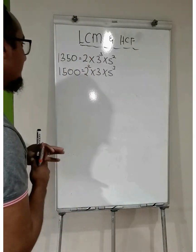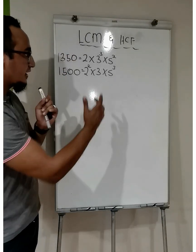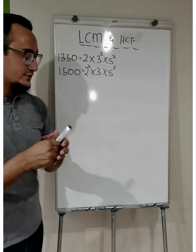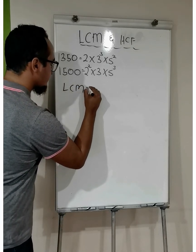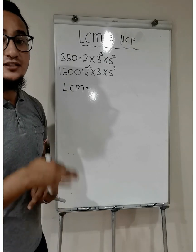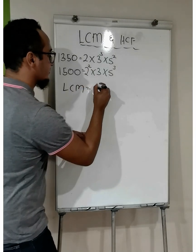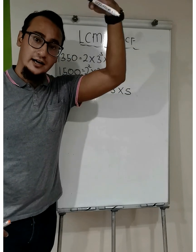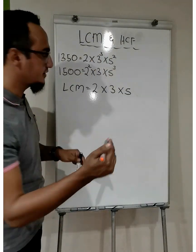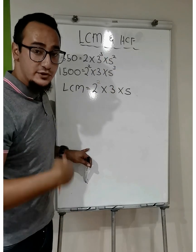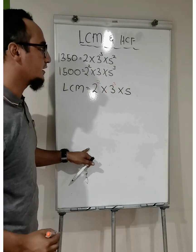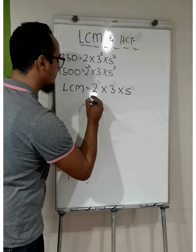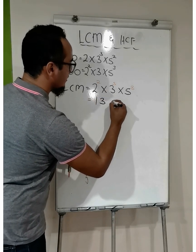On to example number 2: find the LCM of 1,350 and 1,500 — I have the prime factorization for both. For the LCM, I look for each different number I see: a 2, a 3, and a 5. I take the one with the highest exponent. Of my 2s, the highest exponent is 2 to the power of 2. Of my 3s, the highest exponent is 3 to the power of 3. Calculating that gives an answer of 13,500.